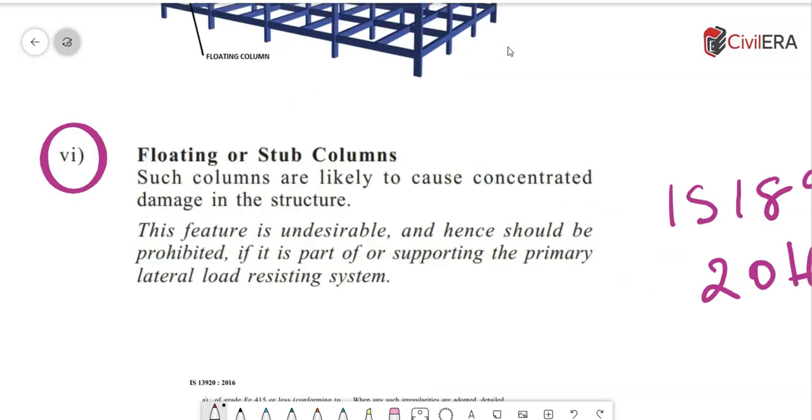It clearly says that such columns are likely to cause concentrated damage in the structure. So the code is clear that it wants to rule out any kind of concentrated local failure which can trigger much more collapse and disproportionate damage.